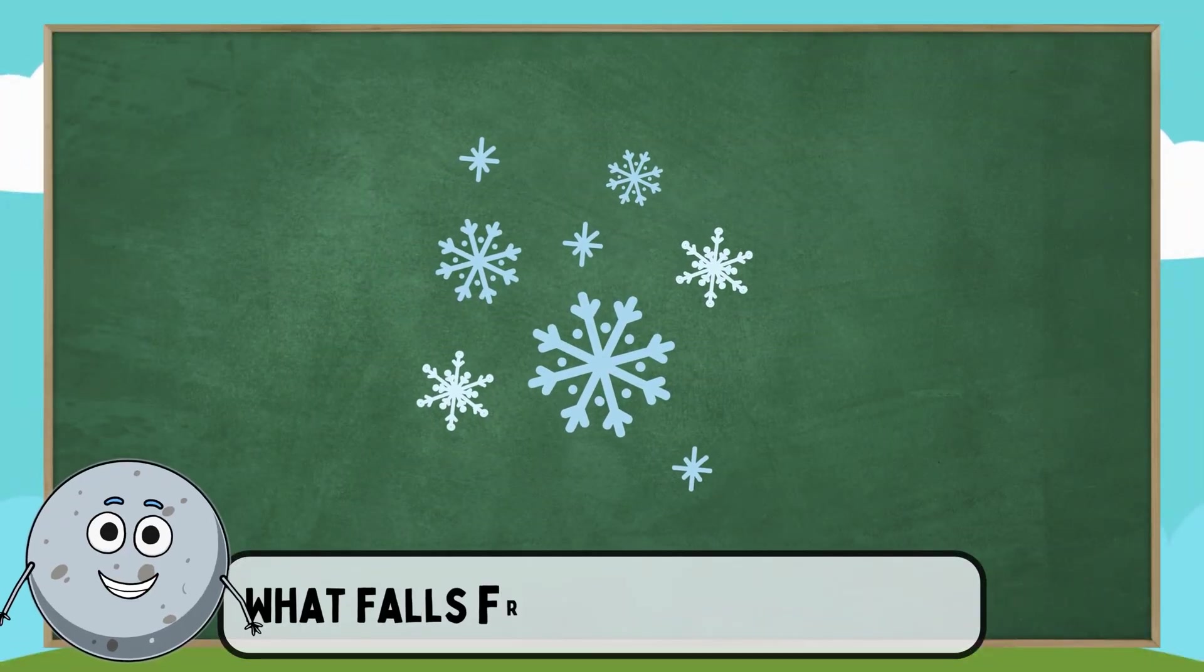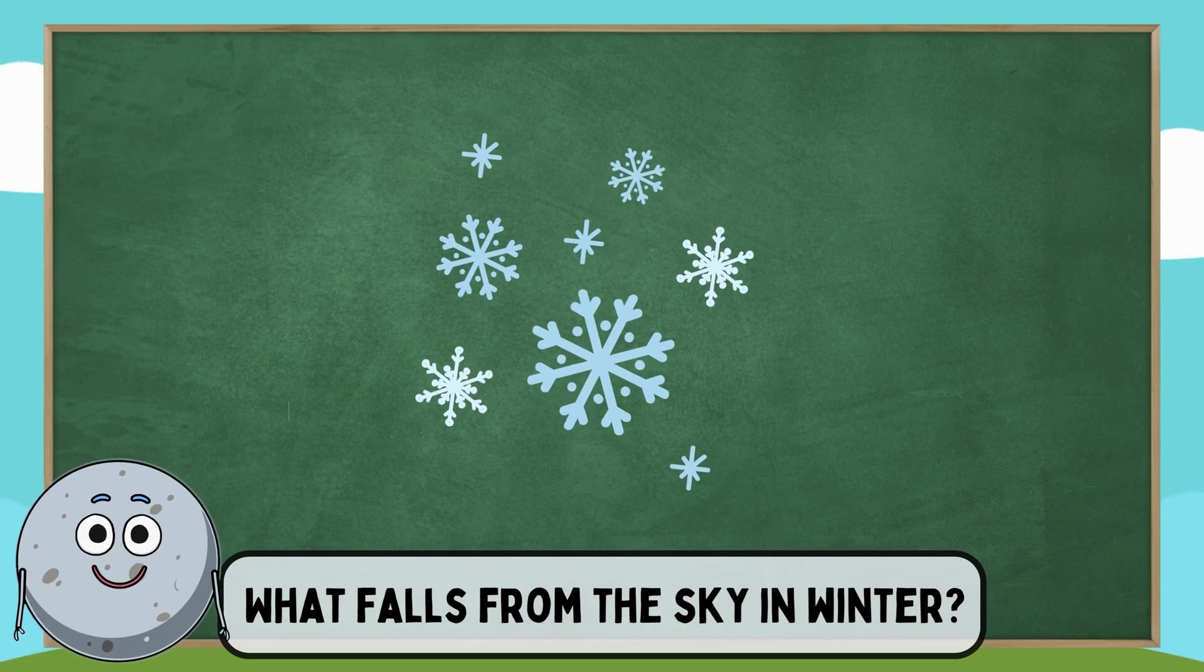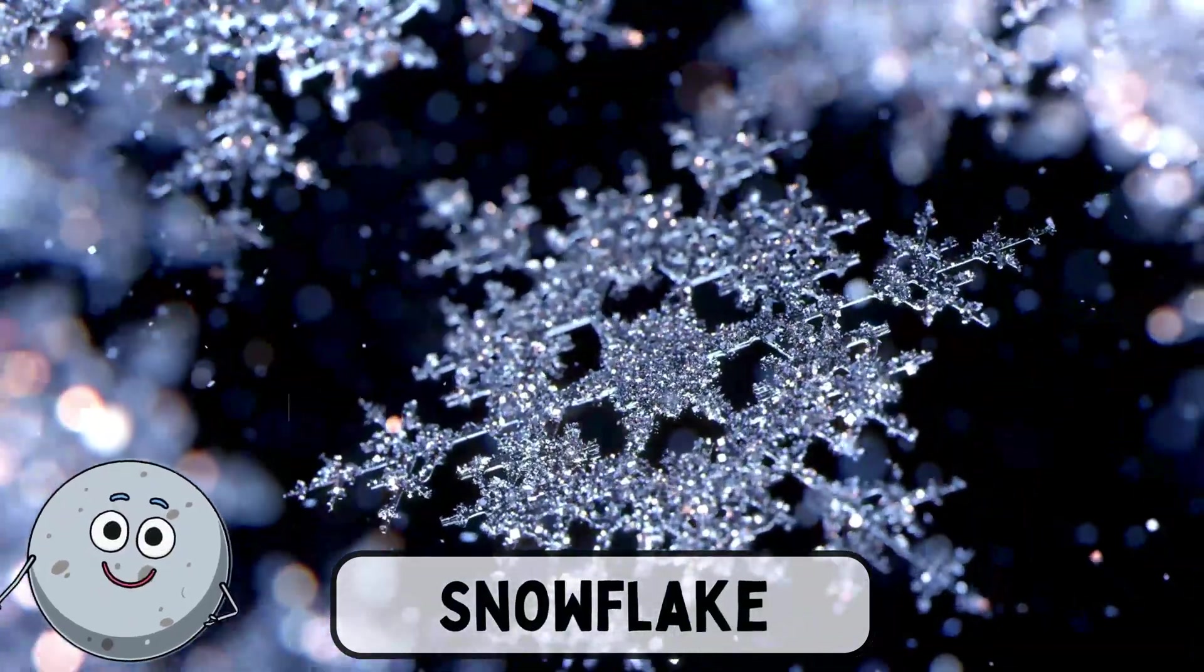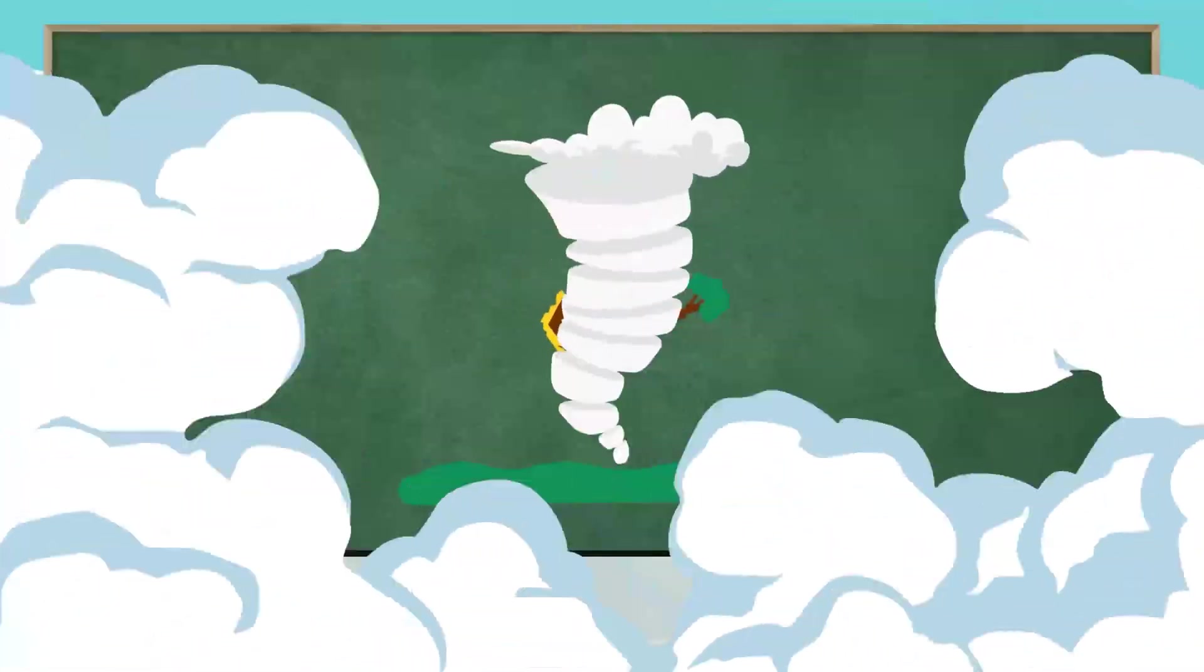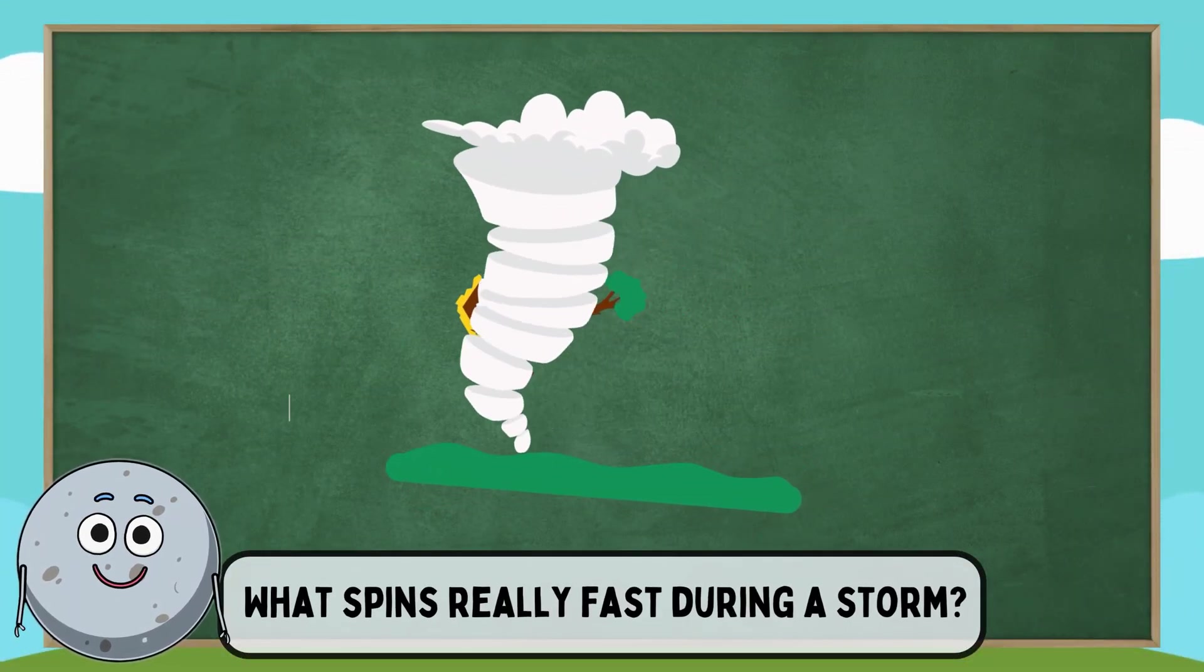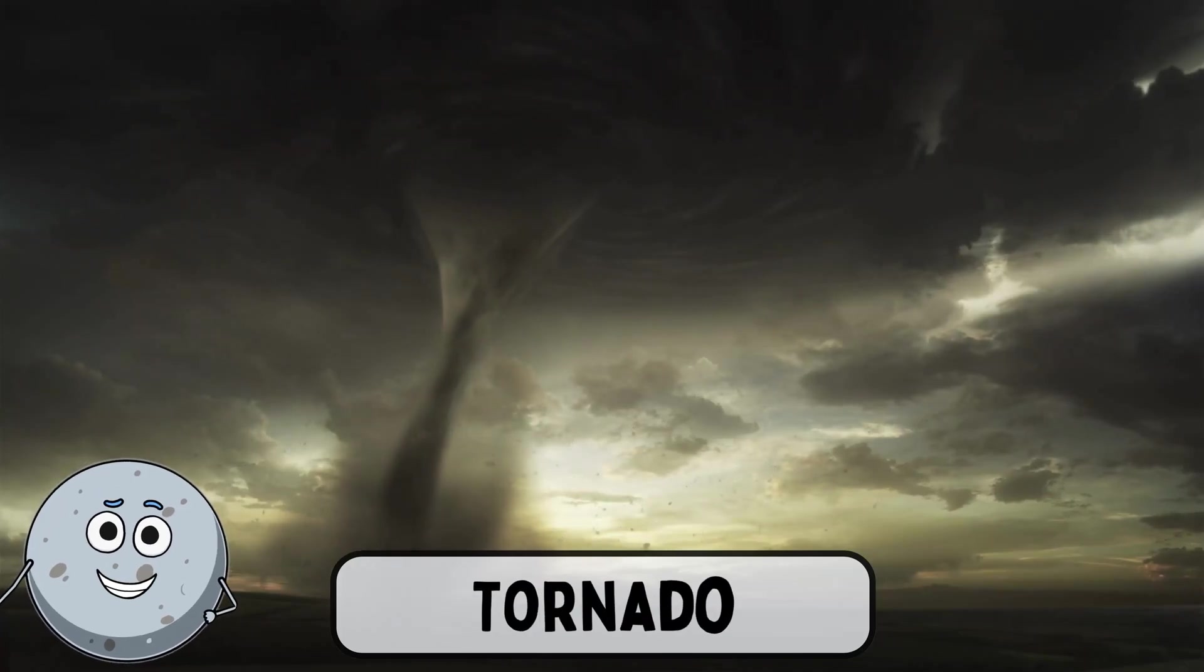What falls from the sky in winter? A snowflake falls from the sky. What spins really fast during a storm? A tornado spins really fast.